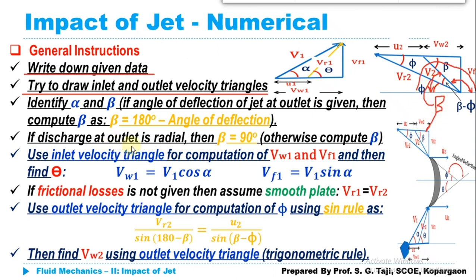If the discharge at the outlet is radial, or if beta equals 90°, in both cases take beta = 90°. Once you consider beta = 90°, Vw2 reduces to zero. Otherwise, if neither condition is stated, you need to compute the value of beta.